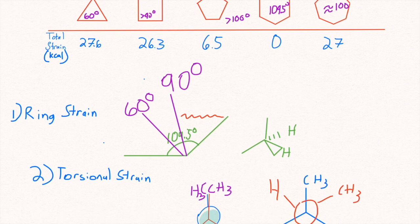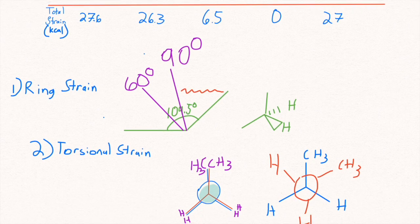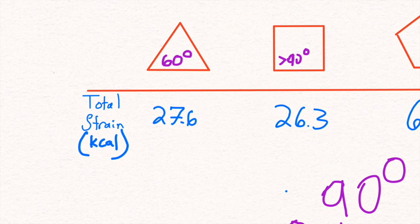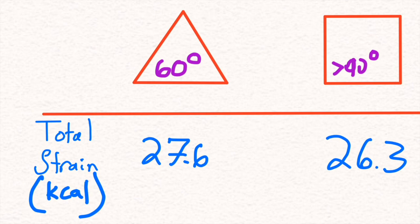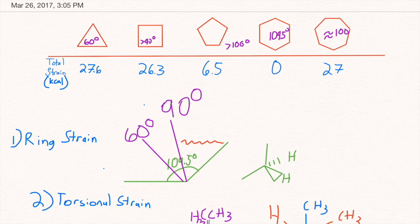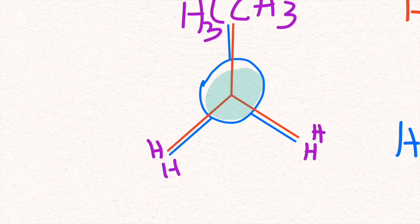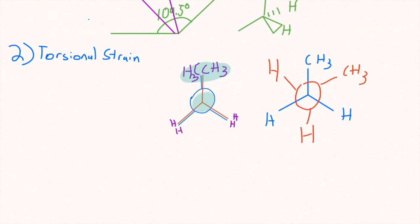You also have torsional strain between these molecules because, as I said, cyclopropane is locked in place. These bonds can't really shift much. The hydrogen bonds off the side of it are also locked in place, meaning that they are constantly eclipsing each other, as shown in this diagram here. They are in a complete eclipse because the carbons on the molecule, if looked at through a top view, are both on top of each other. The hydrogens are also on top of each other, causing torsional strain as well.